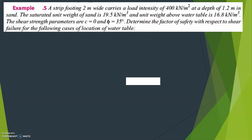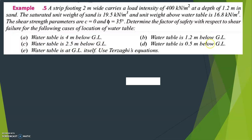There are different cases of water table location to consider. Case one: water table at 4 meters below ground level. Case two: water table at 1.2 meters below ground level. Case three: water table at 2.5 meters below ground level. Case four: water table at 0.5 meters below ground level. Case five: water table at ground level, using Terzaghi's equation.